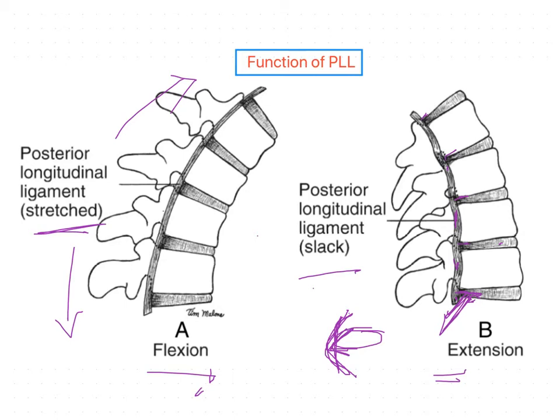The main function of the posterior longitudinal ligament is to limit flexion of the spine. In the cervical region, the tectorial membrane not only gives support to the atlanto-occipital joint but also limits flexion from C2 to the occiput. In the next session we are going to discuss the supraspinous ligament.